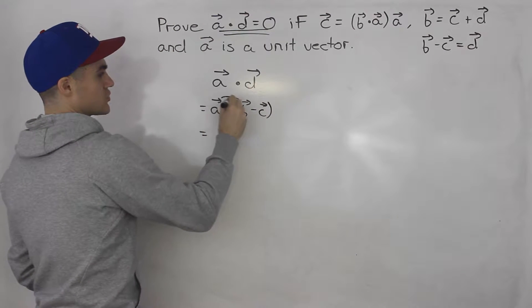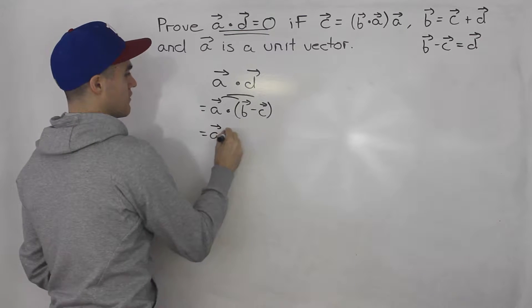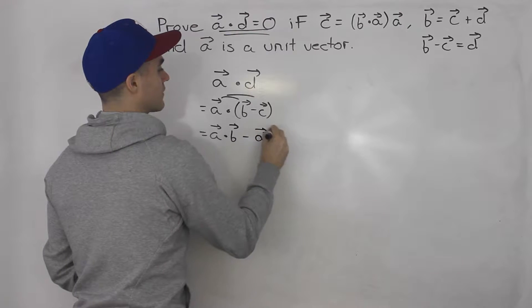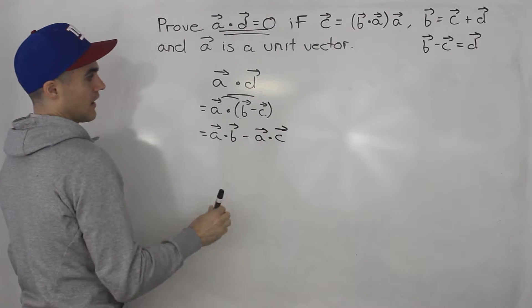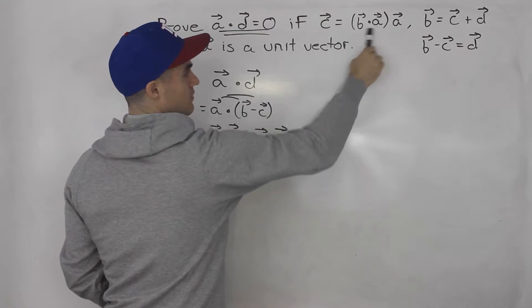So then we can distribute in the brackets, so we'd end up with a dot vector b minus a dot vector c. And we know that vector c is equal to this here, this expression.